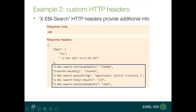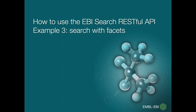In addition to the response, you can also use the HTTP headers available through the API. For example, the EBI-Search-Total-Results header represents the number of results. This can help users consuming the API before processing the response and making decisions as quickly as possible.